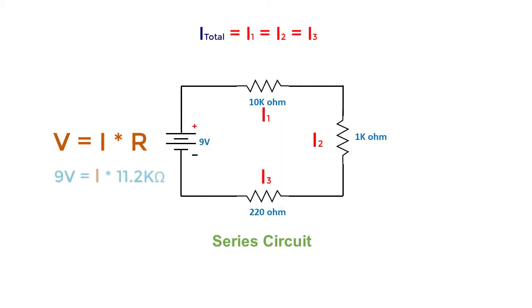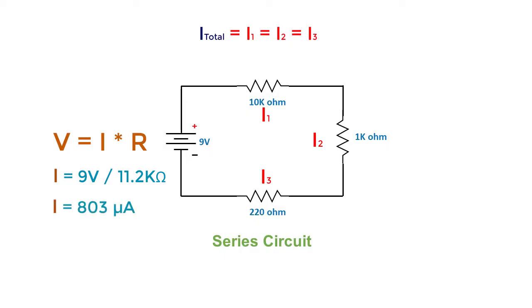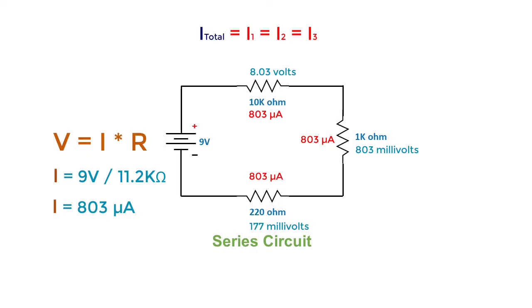In our sample circuit, if we have a 9 volt supply and the total resistance is 11.2 kilo ohms, we simply divide 9 volts by 11.2 kilo ohms, and the resulting total current is 803 microamperes. By applying the third principle, the current in a series circuit is the same through each component, so we can compute the individual voltage drops: 8.03 volts, 803 millivolts, and 177 millivolts respectively. When these individual voltage drops are added, the result is the total supplied voltage of 9 volts.